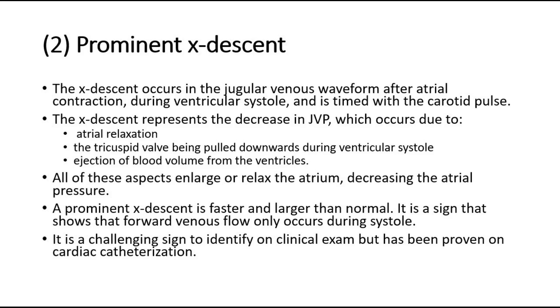A prominent X-descent is faster and larger than normal. It is a sign that shows that forward venous flow only occurs during systole. It is a challenging sign to identify on clinical exam, but has been proven on cardiac catheterization.